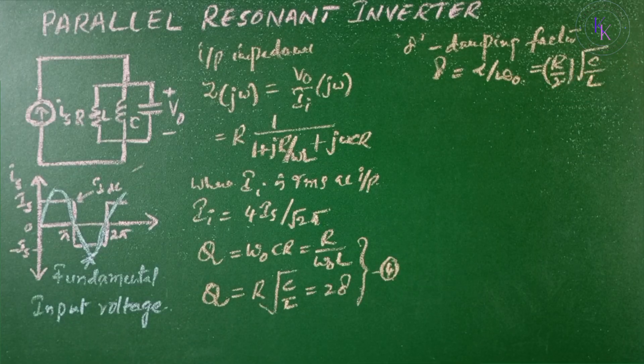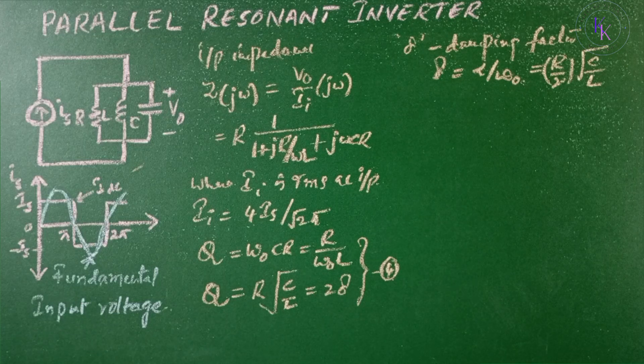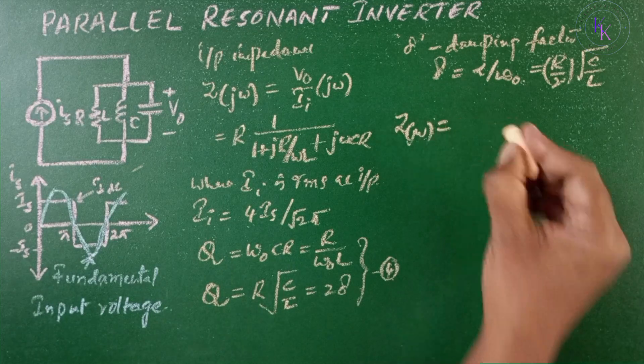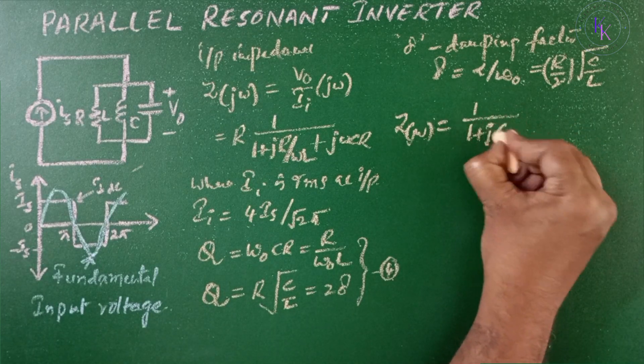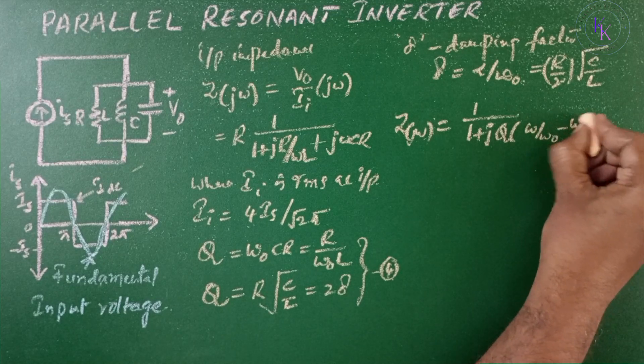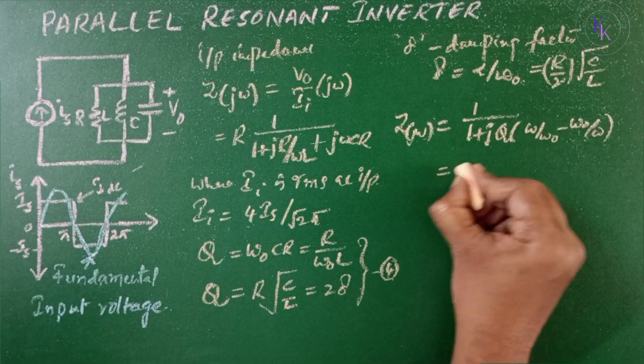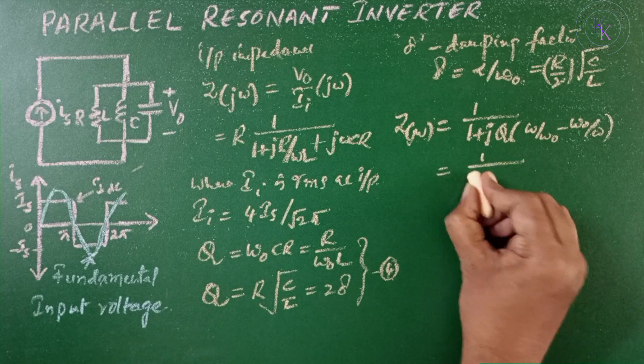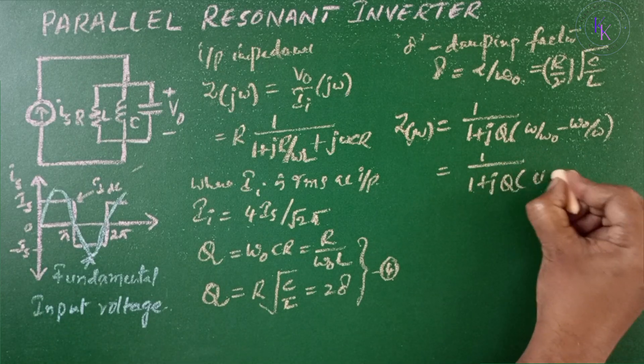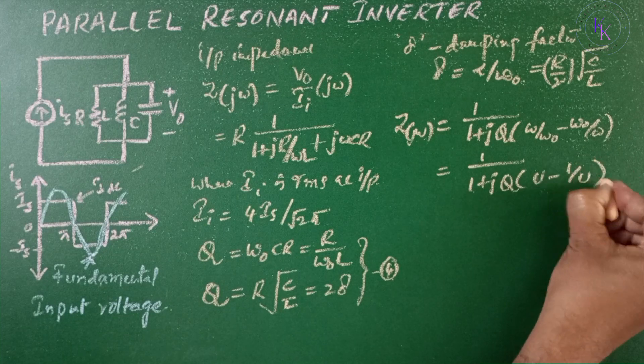Now substituting LC and R in terms of Q and ω₀, we get Z(jω) = 1/(1 + jQ(ω/ω₀ - ω₀/ω)) = 1/(1 + jQ(u - 1/u)).